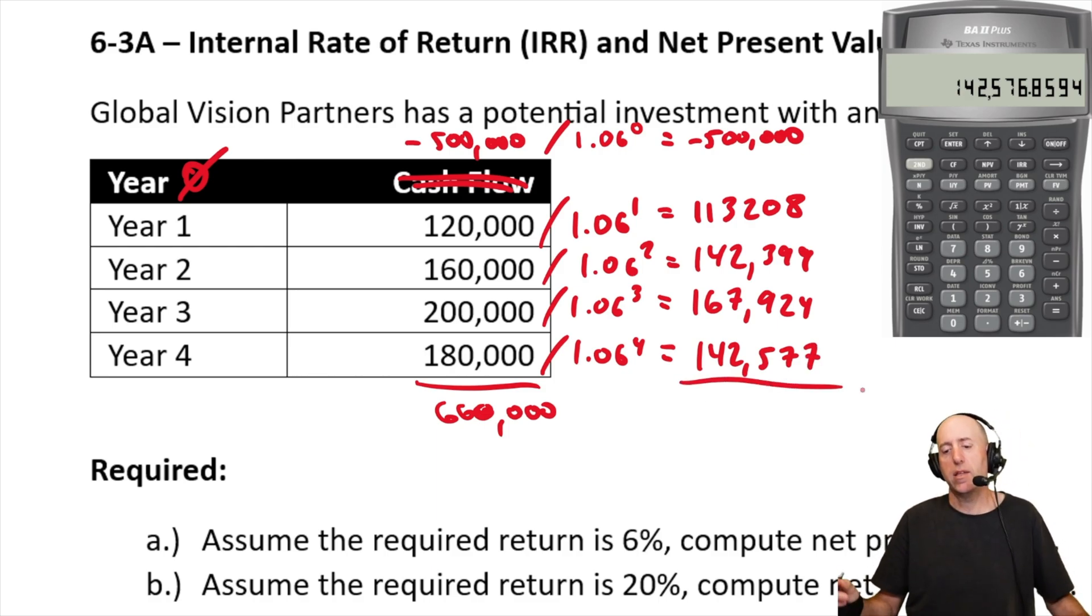Now, just to add everything up, and the idea is, if it's positive, this is a good project. If the total number here is negative, this is not a project worth doing. So, 500,000 negative, plus 113,208, plus 142,399,